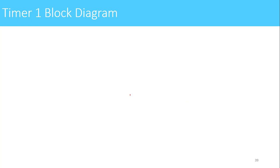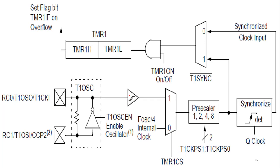Now we will see the block diagram of the Timer1 module present in PIC16F877. The external pins RC0 and RC1 are shown here. We can connect an external crystal between these two pins to generate the clock signal using the internal oscillator. The oscillator circuit shown in the block diagram is used for generating that clock signal.